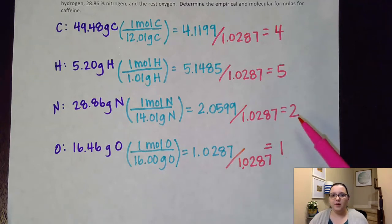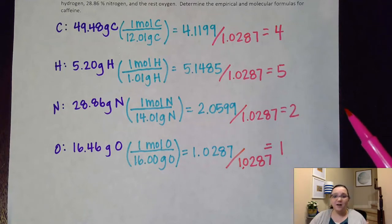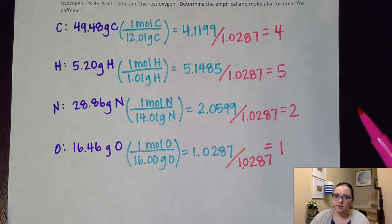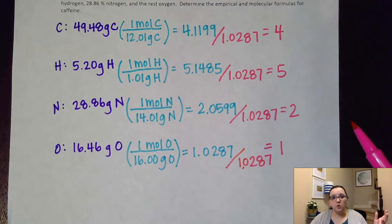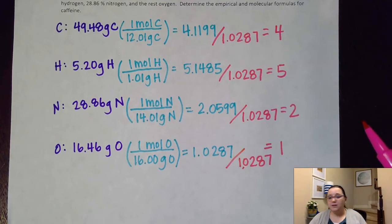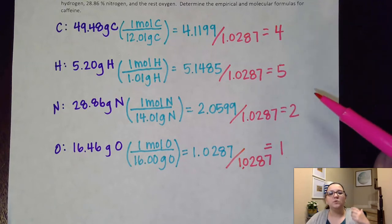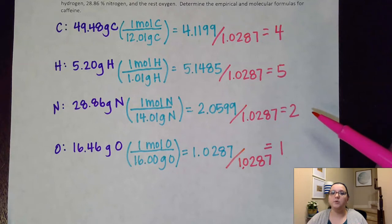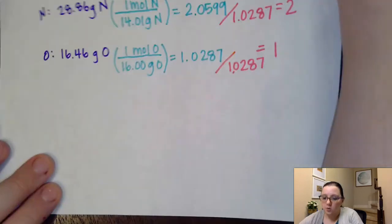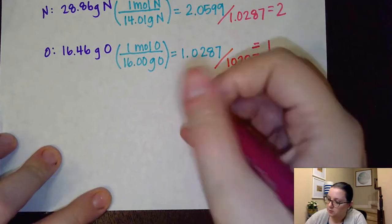However, let's say one of these had come out fractional. Let's say like here instead of 2, this had come out to be 2.5. I obviously still can't put a fraction as a subscript. I can't put 2.5 as a subscript. So I would need to multiply it to get it to a whole number. Well, being 2.5, being a half, I know I can multiply it by 2. Just keep in mind that what I do to one of these numbers, I then have to do to all of them. So if you have to multiply one of these by 2 to get it to a whole number, you're going to have to multiply all of these by 2. Otherwise, you're not maintaining the ratio that you have figured out.